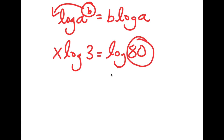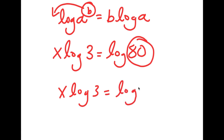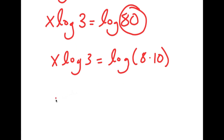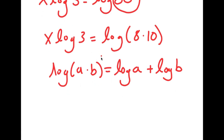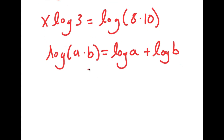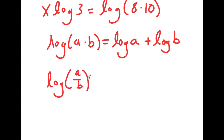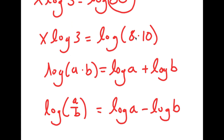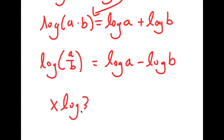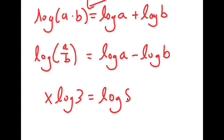I'm going to rewrite 80 as 8 times 10. If I have something in the form log a times b, this is equal to log a plus log b. This is another logarithmic property. There is also log a over b, and if I have something in this form, this is the same thing as log a minus log b. Going back to the problem, we have log 8 times 10, so we can think of 8 as a and 10 as b. So this gives us x log 3 is equal to log 8 plus log 10.